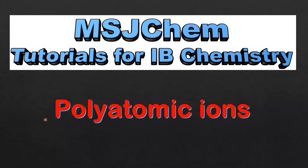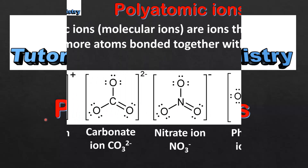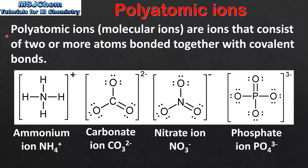This is MSJChem. In this video I'll be looking at polyatomic ions. Polyatomic ions, or molecular ions, are ions that consist of two or more atoms bonded together with covalent bonds. Here we have four examples of polyatomic ions.